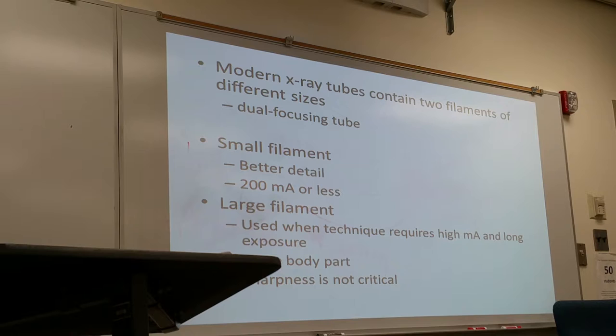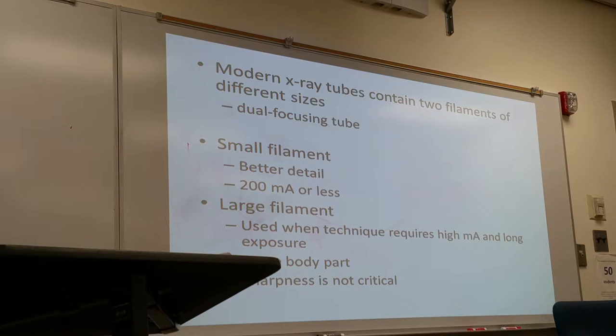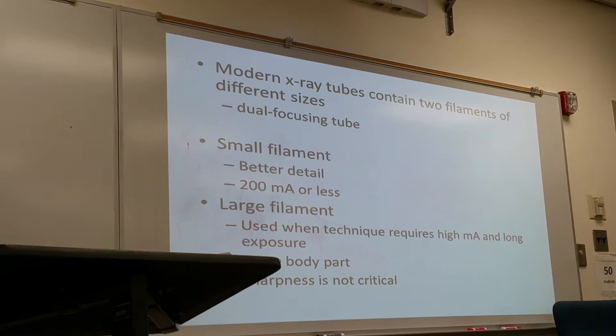In today's x-ray tubes, there are usually two different sized filaments — one large and one small — in what's called a dual focusing tube. The reason is mainly for different body parts and for resolution. The smaller filament generally gives you more detail because the beam is much more concentrated. However, with the smaller filament, you can only use certain mA settings — generally 200 mA or less. Anything more would cause excessive wear and tear on the smaller filament.